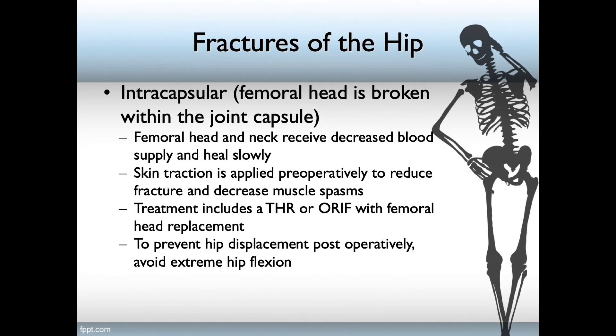Hip fractures are divided into two classifications. Intercapsular fractures occur when the femoral head is broken within the joint capsule. The femoral head and neck receive decreased blood supply and heal slowly. Skin traction is applied post-operatively to reduce the fracture and decrease muscle spasms. Treatment includes total hip replacement or ORIF with femoral head replacement. To prevent hip displacement post-operatively, an abductor pillow should be used.